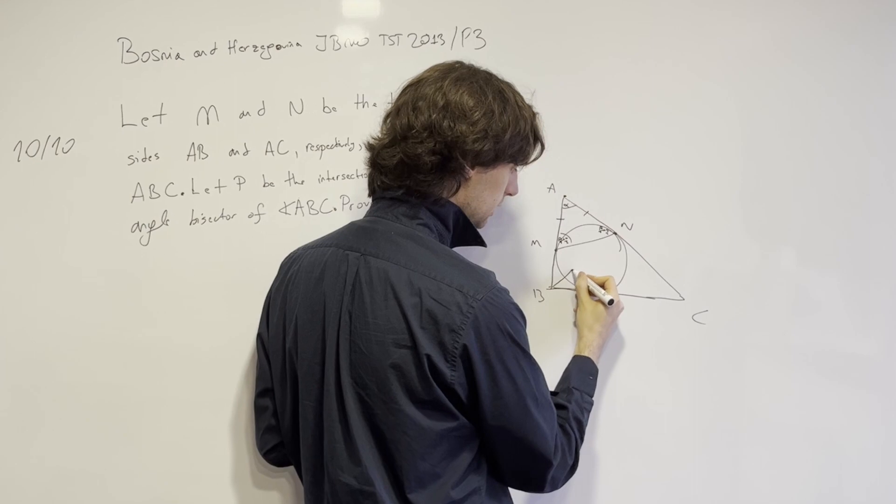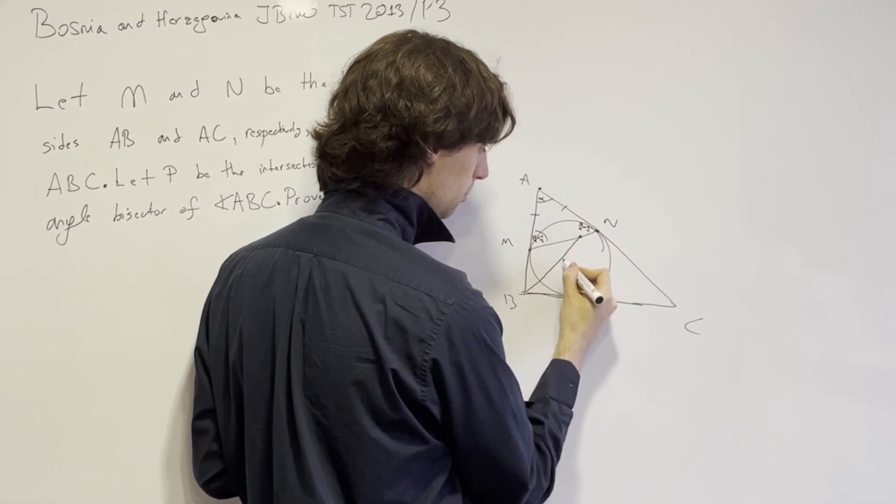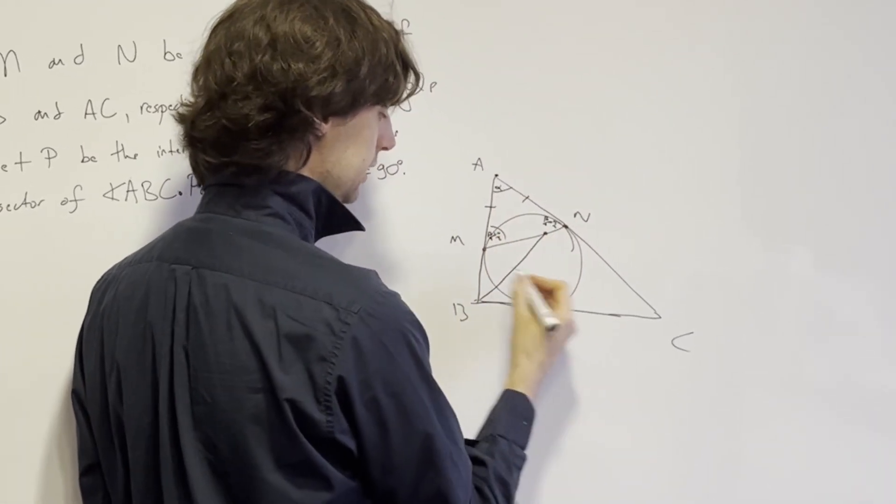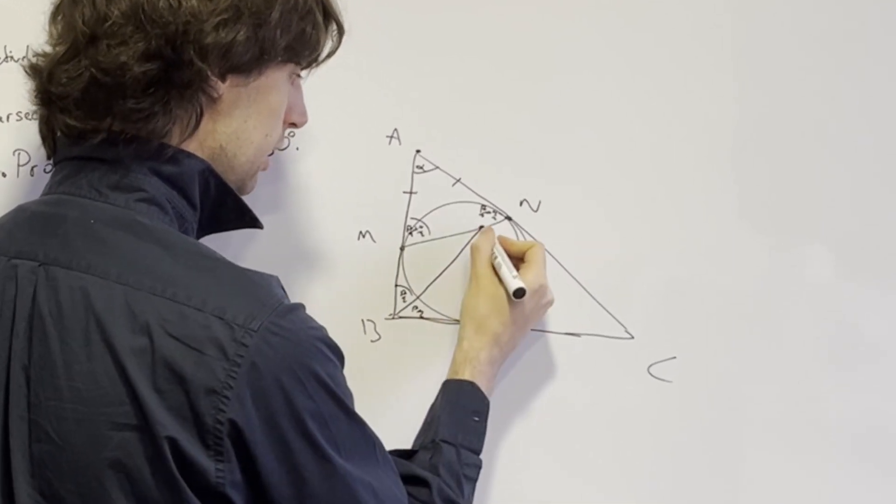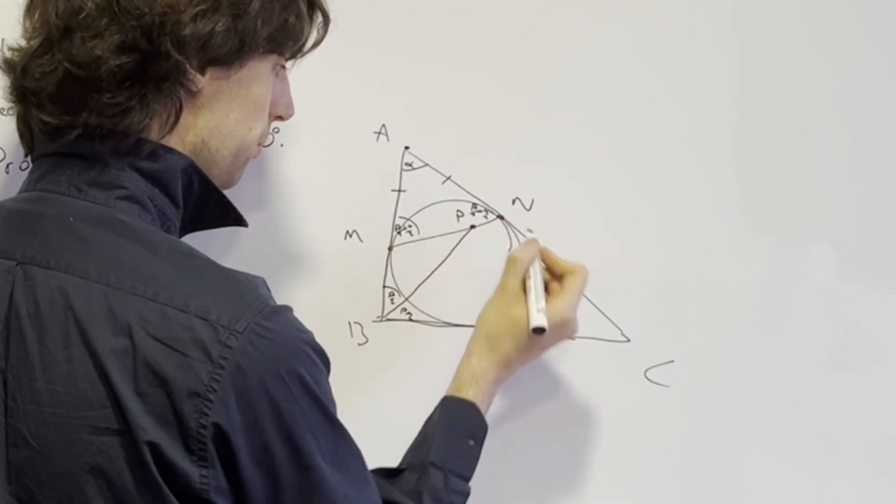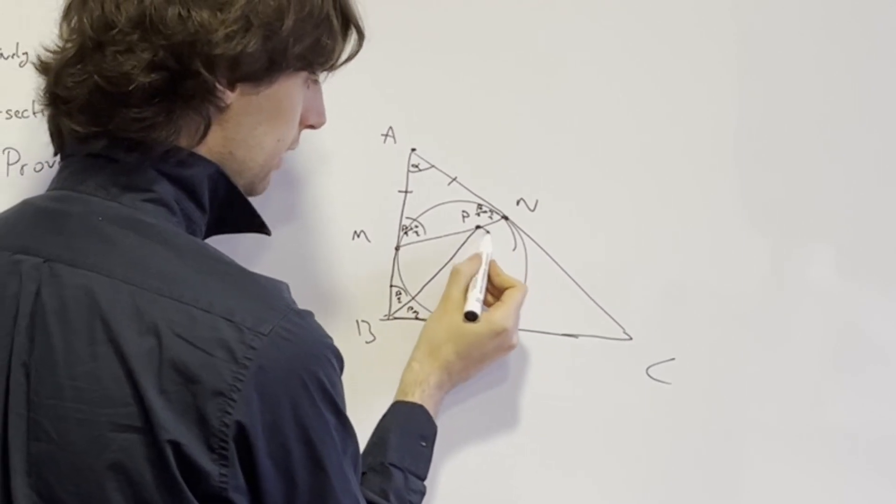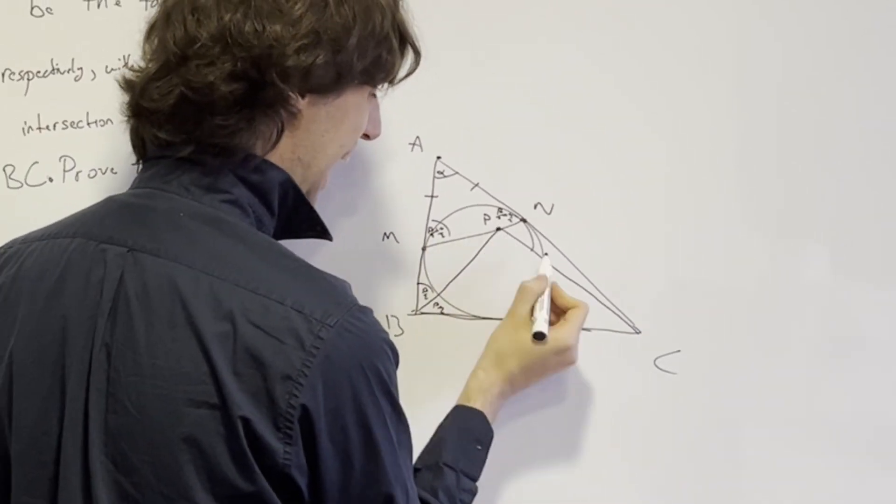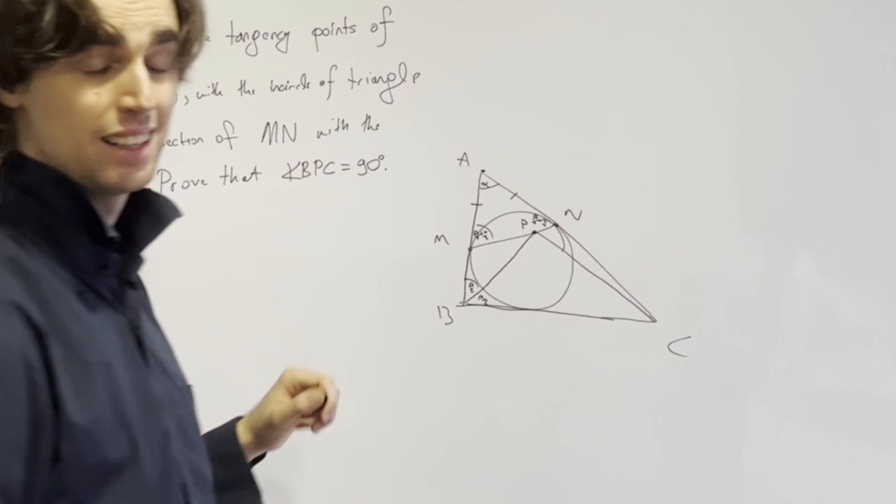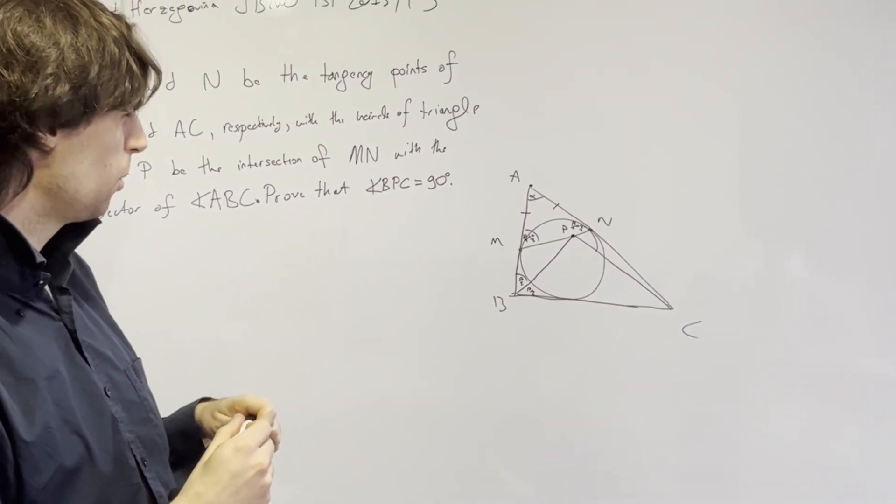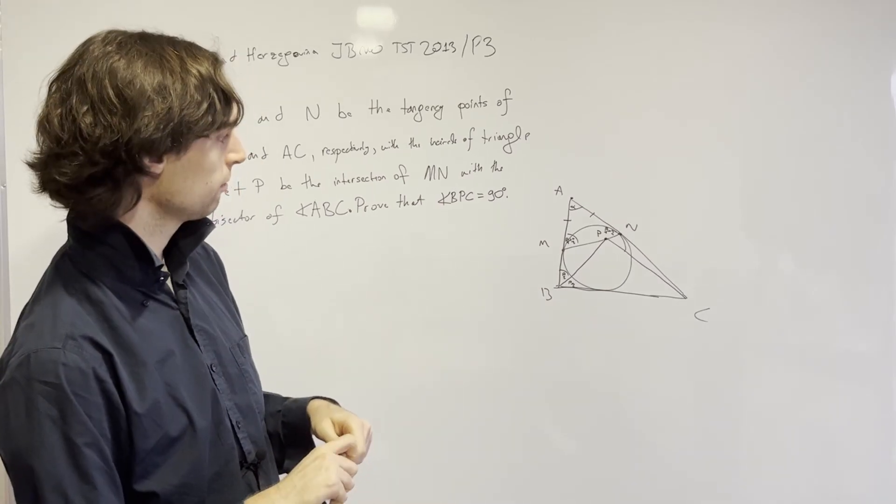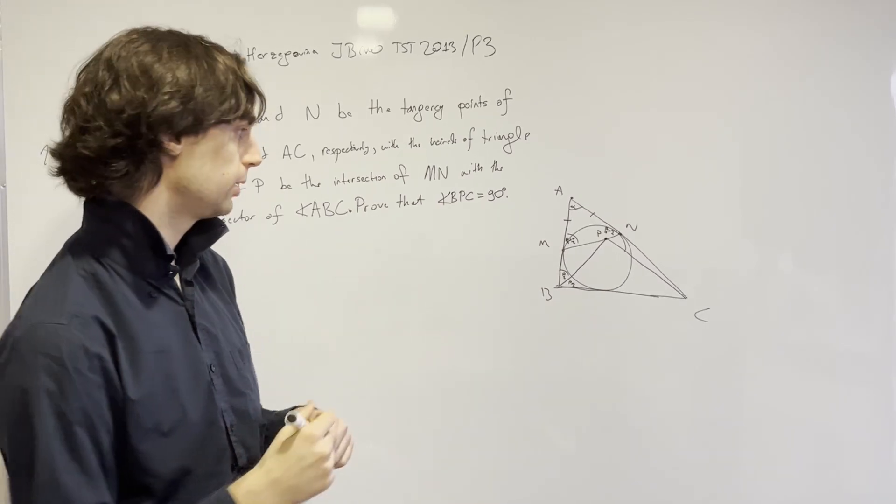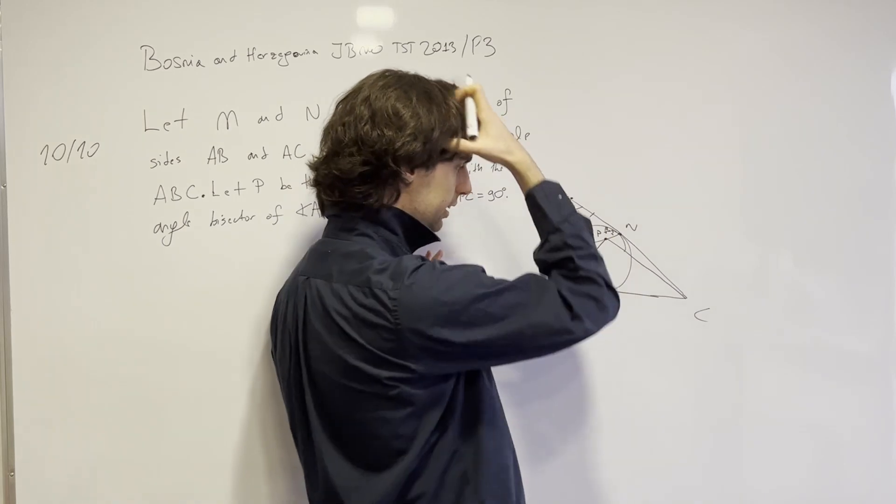I have the intersection of this angle bisector of ABC, so this is beta/2 and beta/2, and this is point B. We must prove that this angle is 90, which seems very difficult. But first, the first thing we do is calculate the angle.